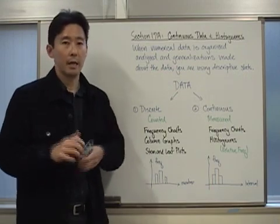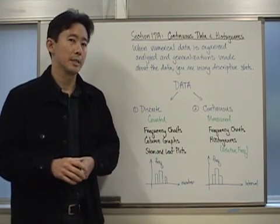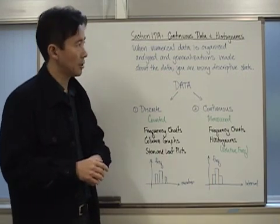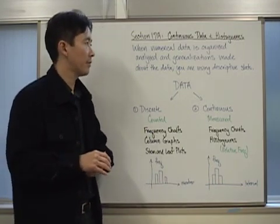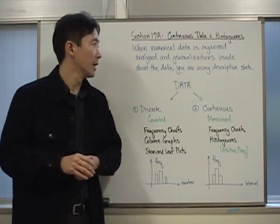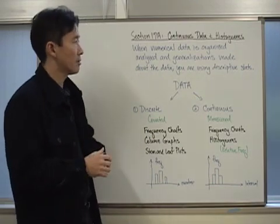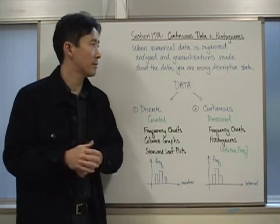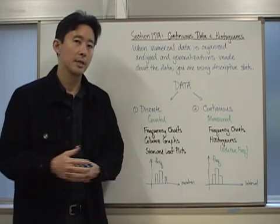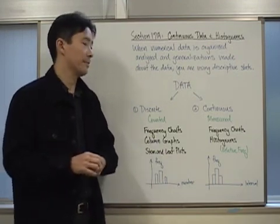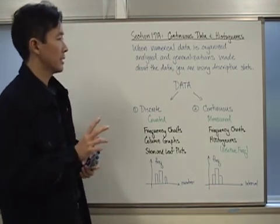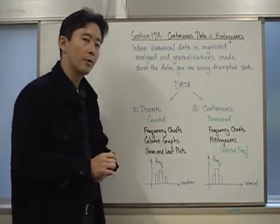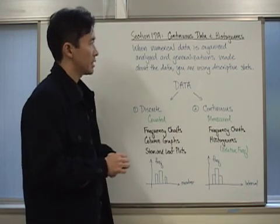Let's start off with the basics. What we need to have in order for us to make any kind of generalizations, in order for us to analyze and organize, the first thing that we have to have is data and numerical data. There are two basic types of data that we're going to be working with in this chapter.